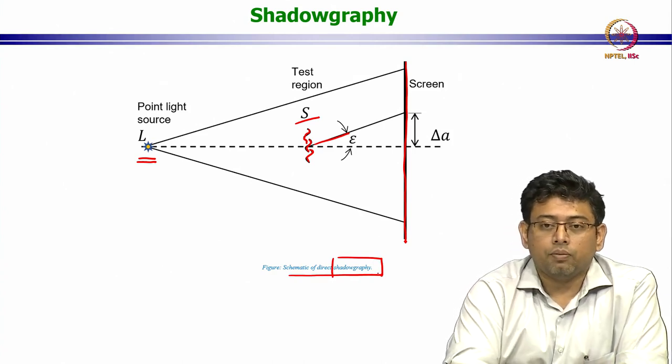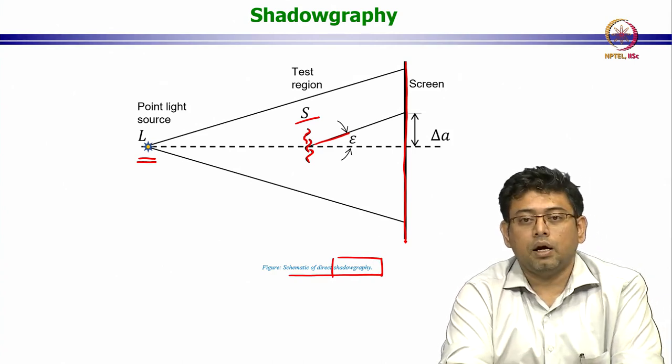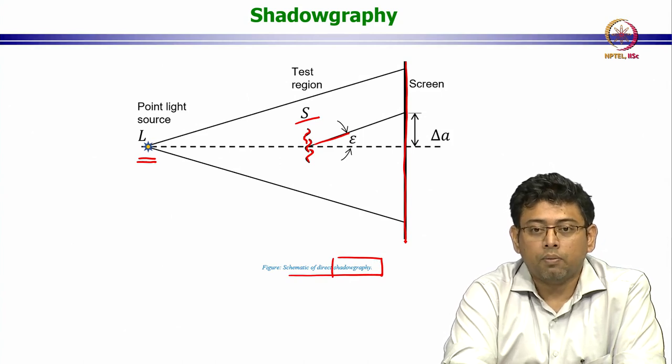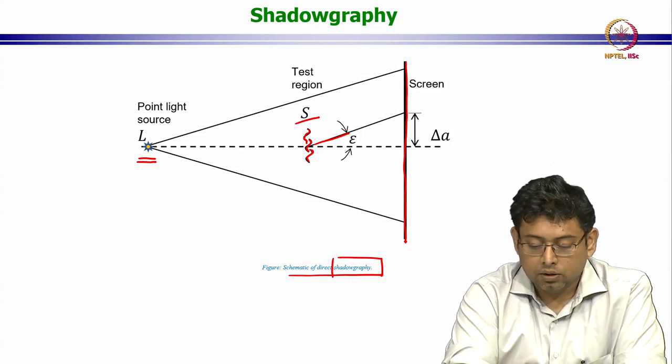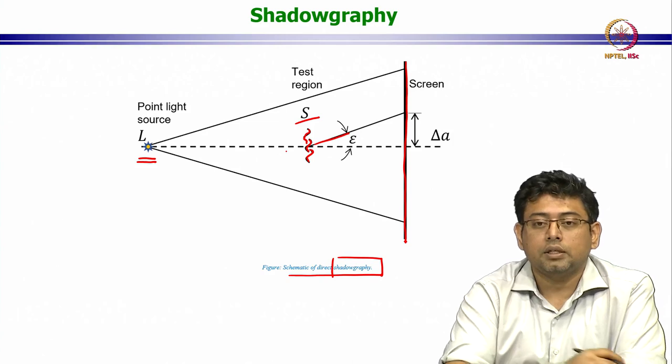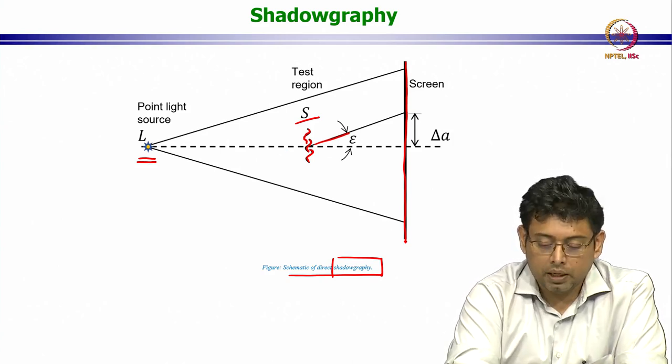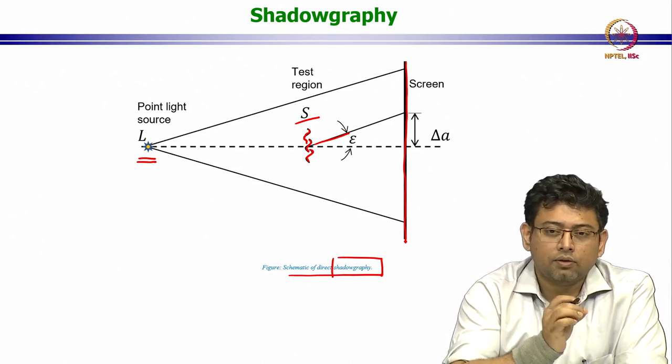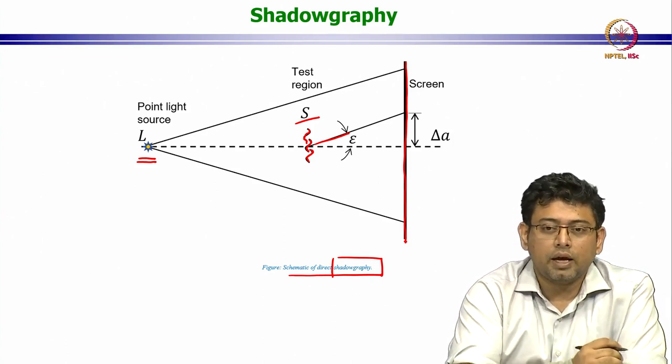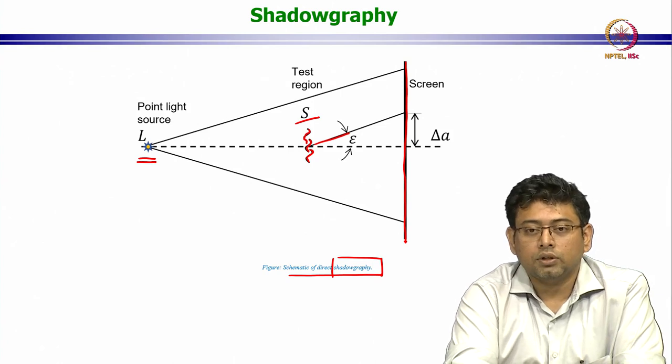Much like what happens when a solid body intercepts light - a solid opaque body intercepts light. Here also you have a shadow that is cast, but this time you have the passage of light through the transparent media, and it is just that the passage of light is altered just a tiny bit because of the Schlieren object.